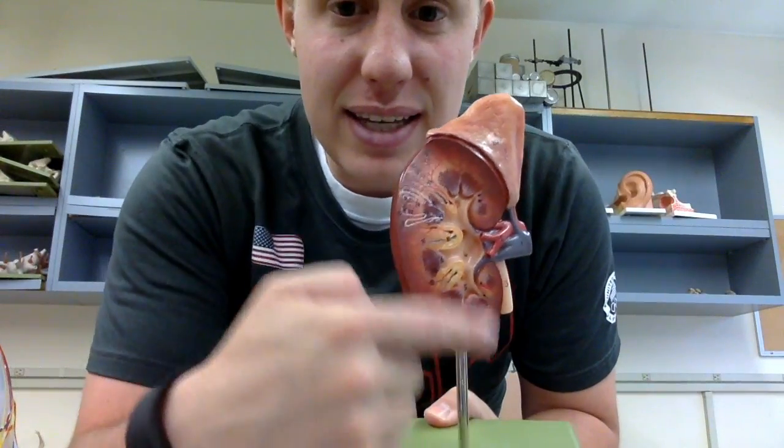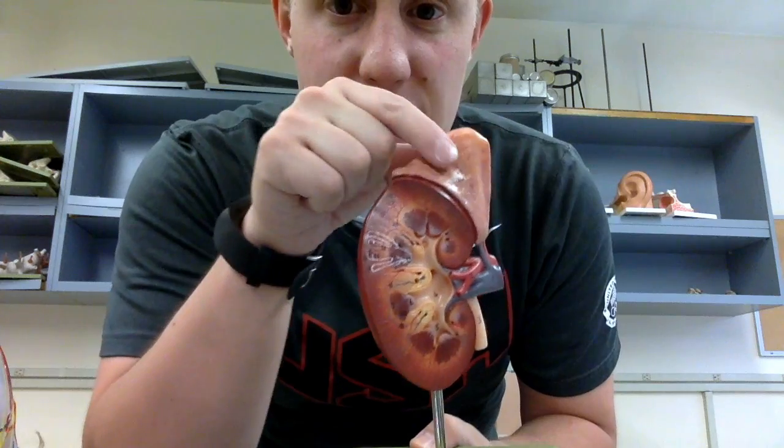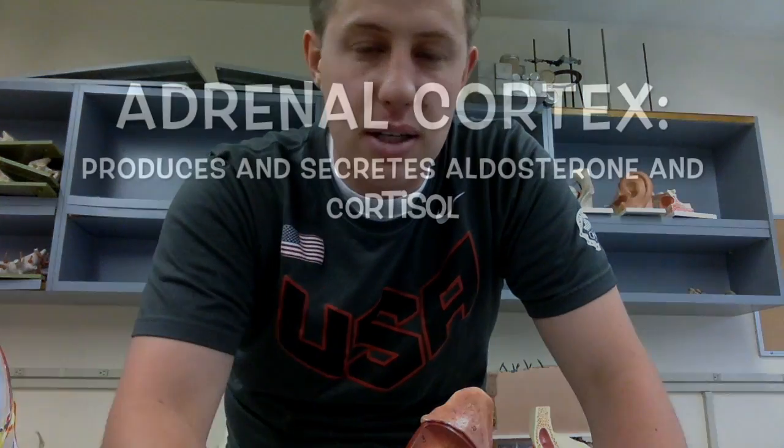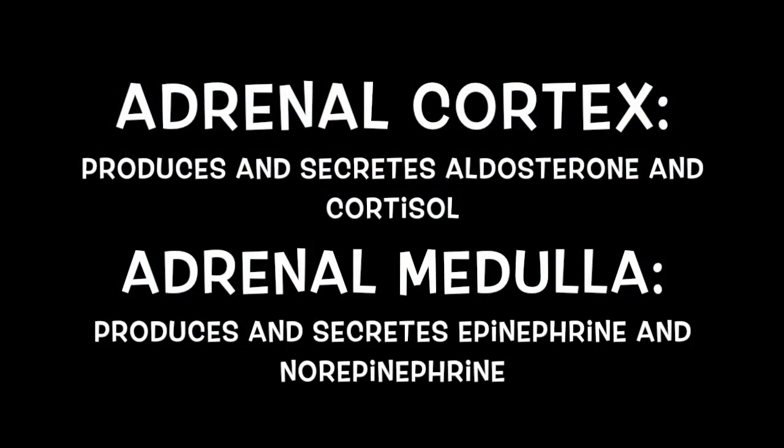Sitting on top of the kidneys are the adrenal glands, also called suprarenal glands. They produce and secrete different hormones depending on the layer. The outer layer is the adrenal cortex, and the inner layer is the adrenal medulla. I'll show you the differences on the next screen.